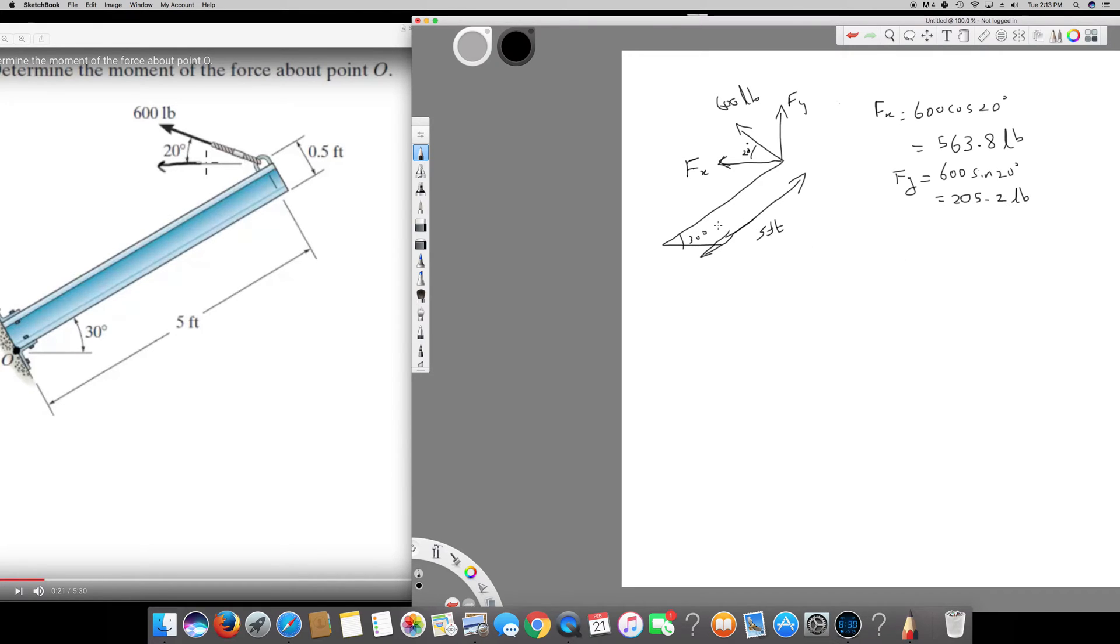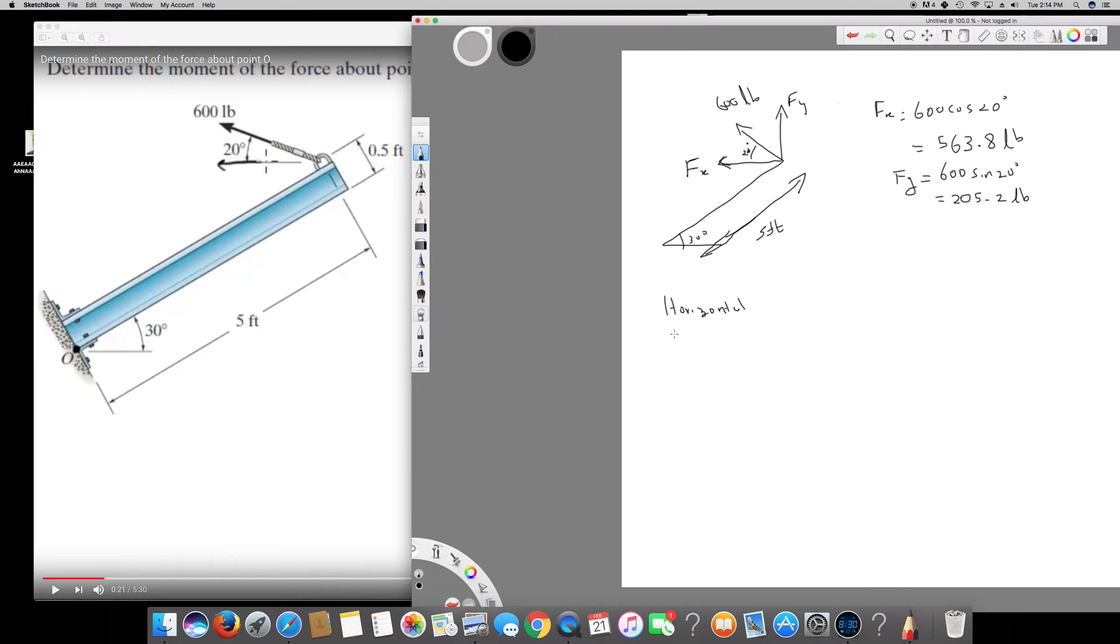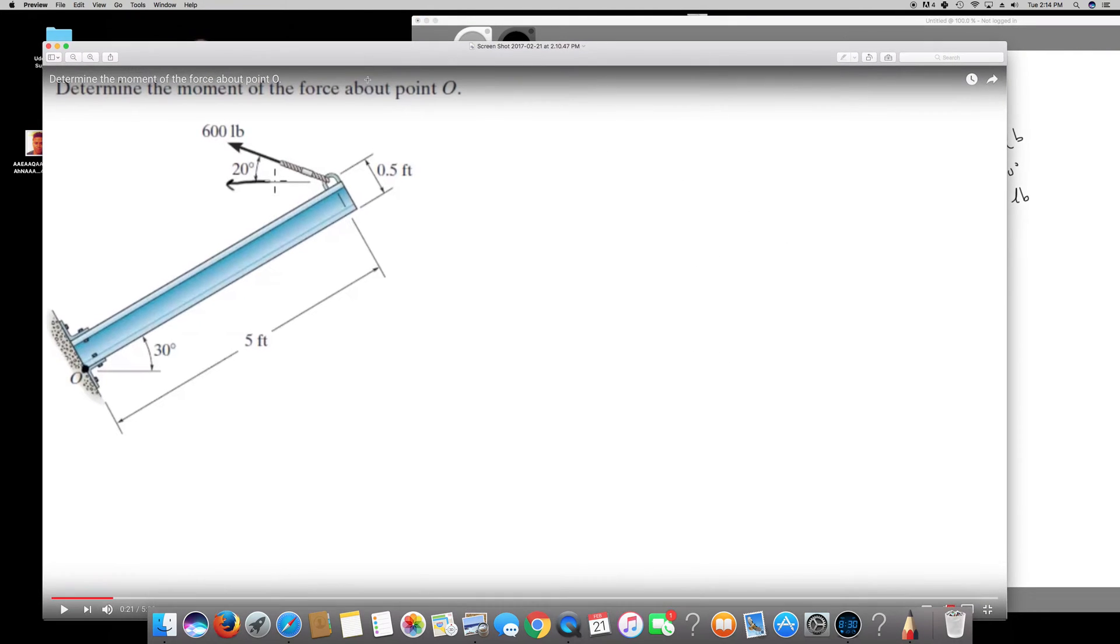Now what I have to find is the horizontal distance and the vertical distance. So first let's find the horizontal distance. Horizontal is going to be 5 feet and it's inclined 30 degree, right, so we can use 5 times cos 30 minus—if you see here we have this 0.5 depth, this depth is 0.5, this object is 0.5 height, right?